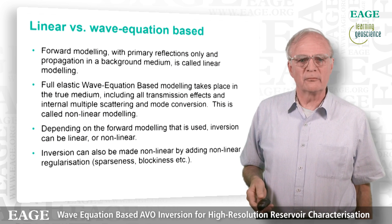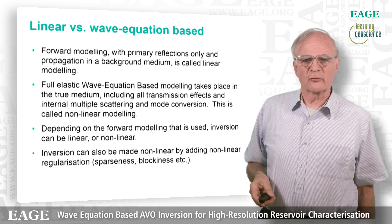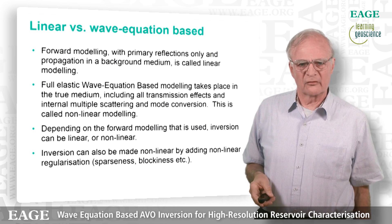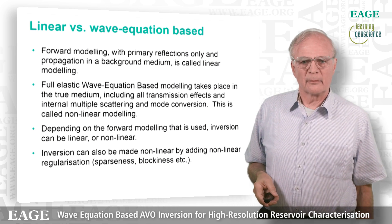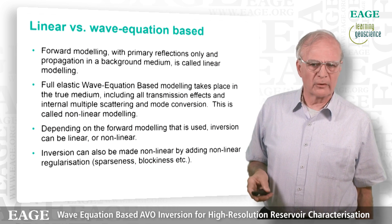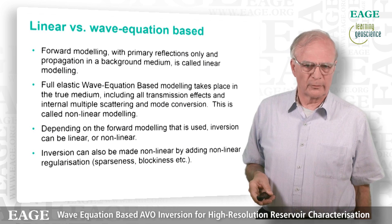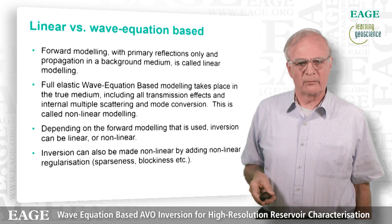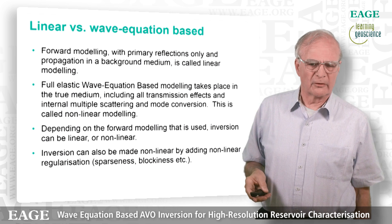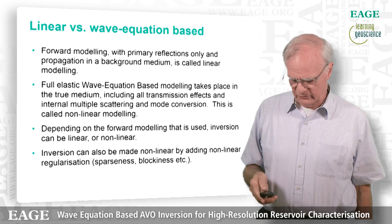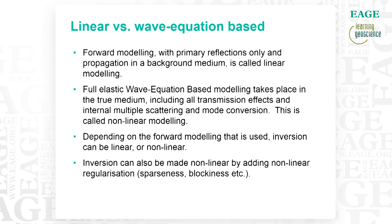To complicate this issue, there is also the constraint that you can add to your inversion. An otherwise linear data model can be augmented with a nonlinear constraint like sparseness, blockiness, and things like that, and that can also be a source of nonlinearity. So the inversion can be nonlinear twice: it can be nonlinear because the data model is nonlinear, or because the constraint is nonlinear.